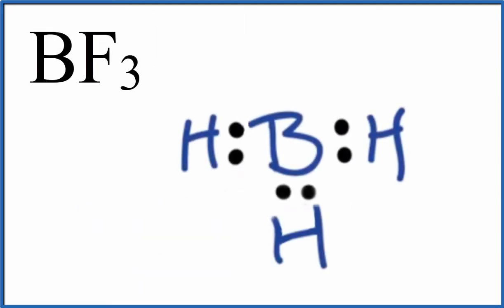So here's the Lewis structure for BH3. When we look at BH3, we can see that there are no lone pairs, and that there are three bonds between the boron and the hydrogen atoms.